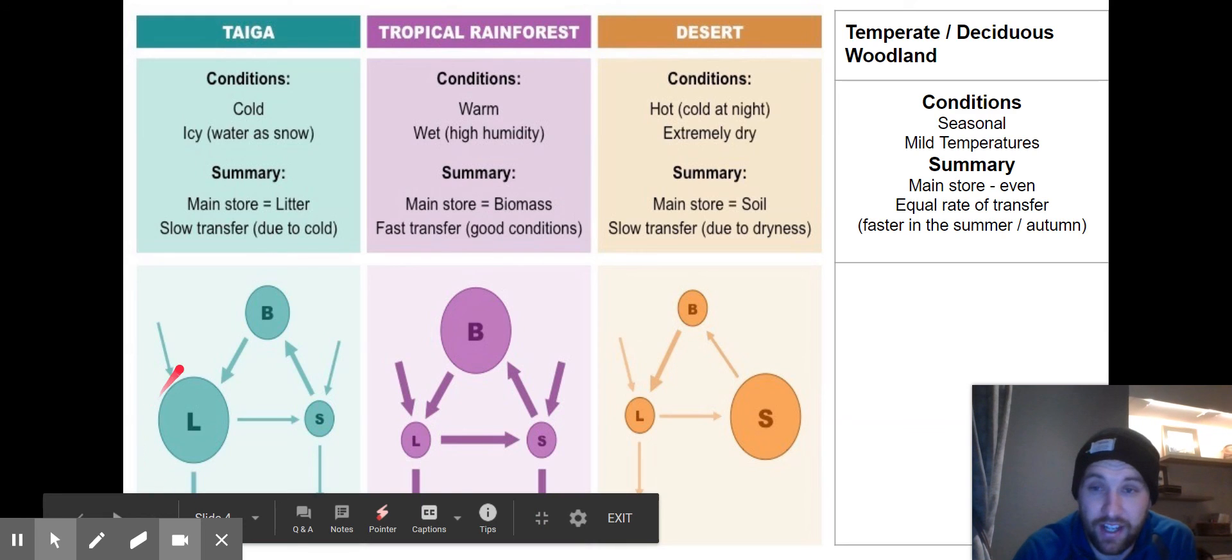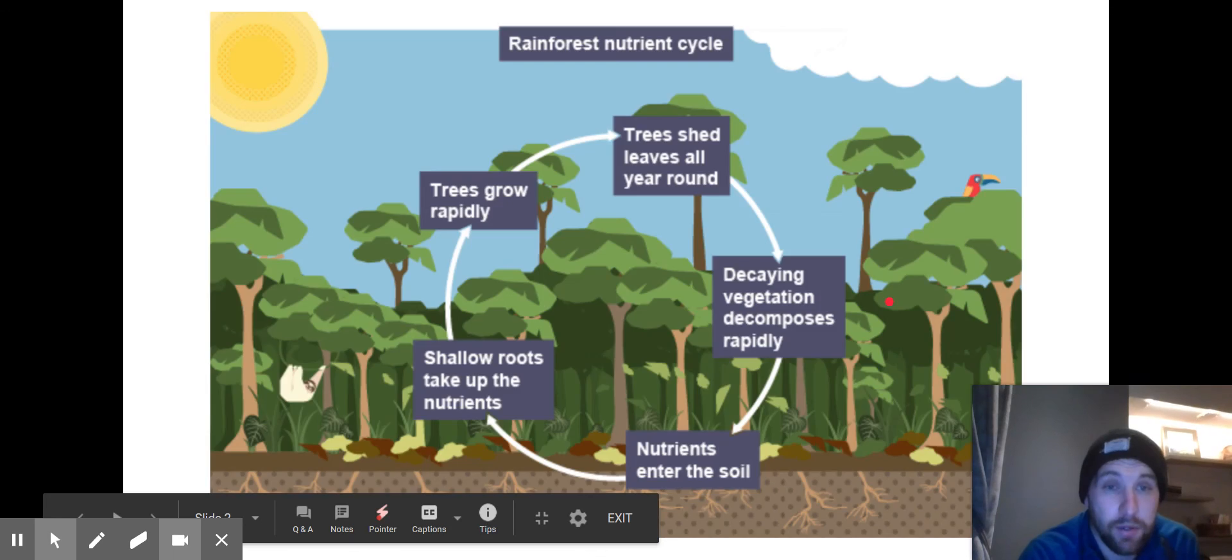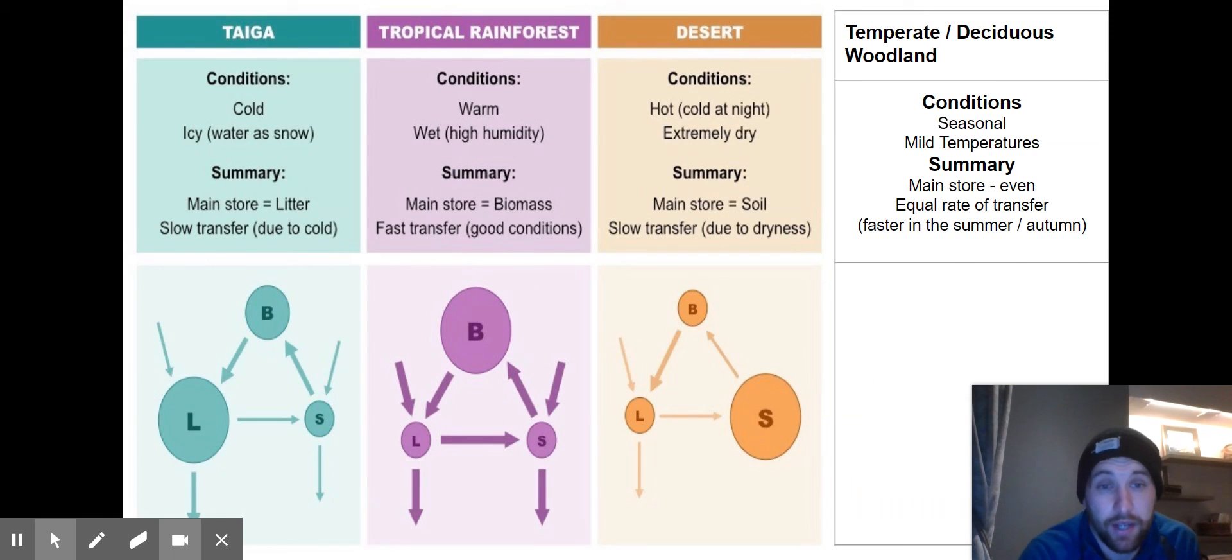Now the temperate deciduous woodland is most like this first example I showed you, as it's not too cold, not too hot, not too wet, not too dry. So it actually means the nutrient and the three main stores are all in balance, actually quite a good level of equilibrium, and they're all fairly equal. So the circles should be the same size and the arrows roughly the same size as well. Yes there's inputs from precipitation, yes there's quite a lot of inputs from weathering, so we've got two big inputs here.